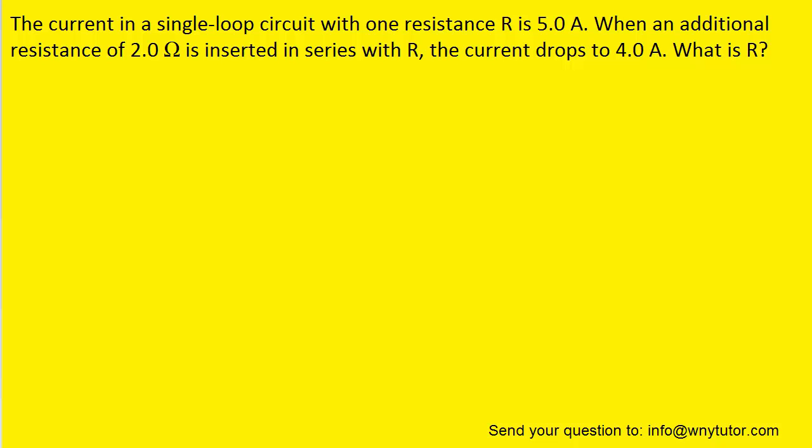What we can do to solve the question is draw a picture that first has a single resistance R, and then has the additional resistance of two ohms in the circuit.